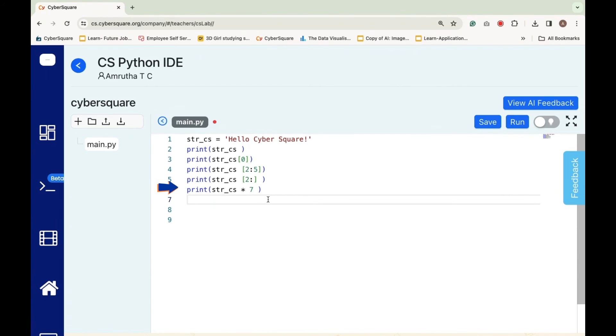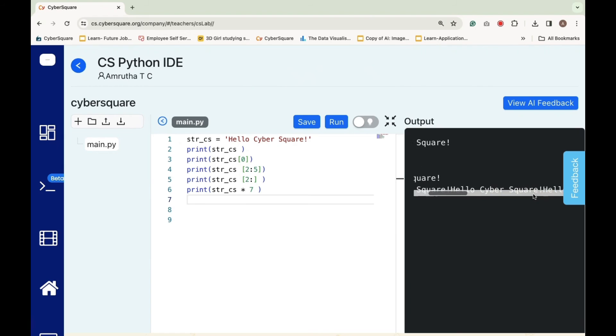istr_cs * 7 will print the string istr_cs repeated 7 times. Here you can see that.